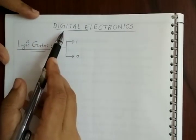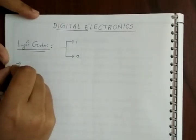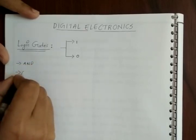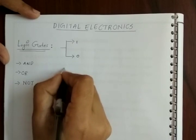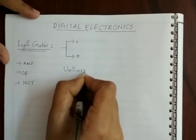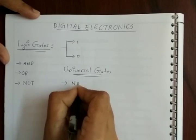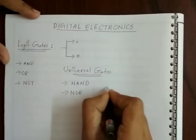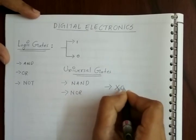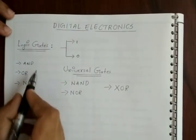We have to study three basic logic gates: AND gate, OR gate, and NOT gate. These are the three basic logic gates. Then in the next topic you will be studying about the universal gates. There are two universal gates: NAND gate and NOR gate. And one special type of gate known as the exclusive OR gate, represented as XOR. So these are the five important logic gates we will be discussing in this chapter.